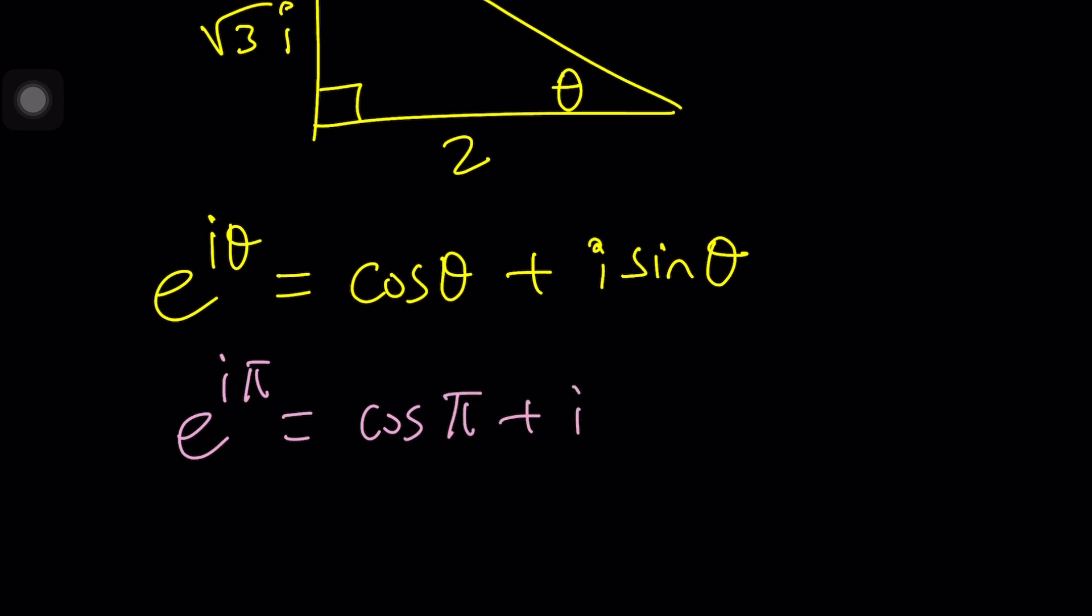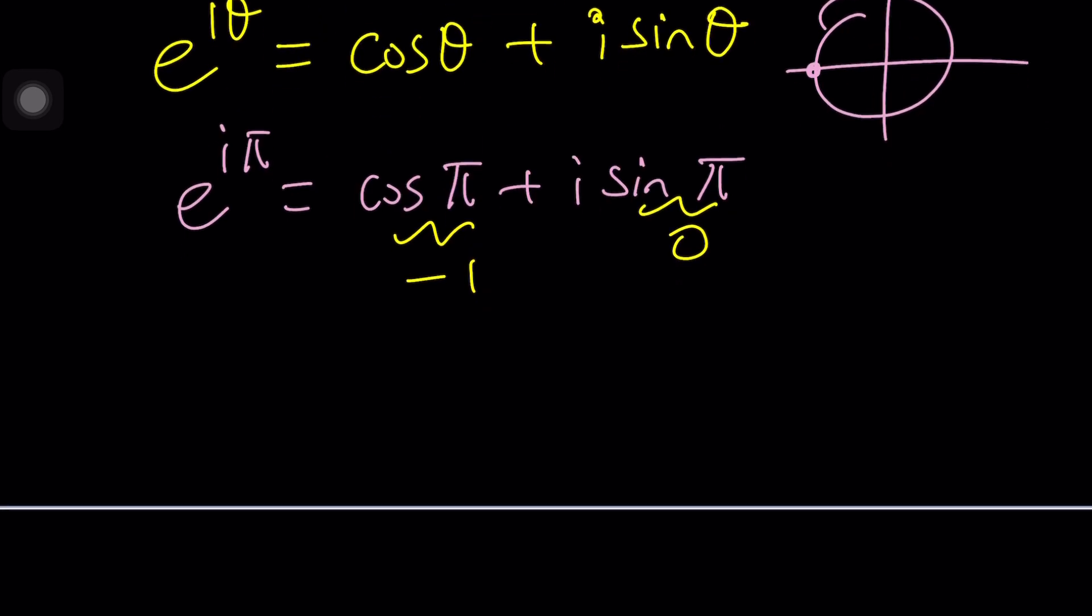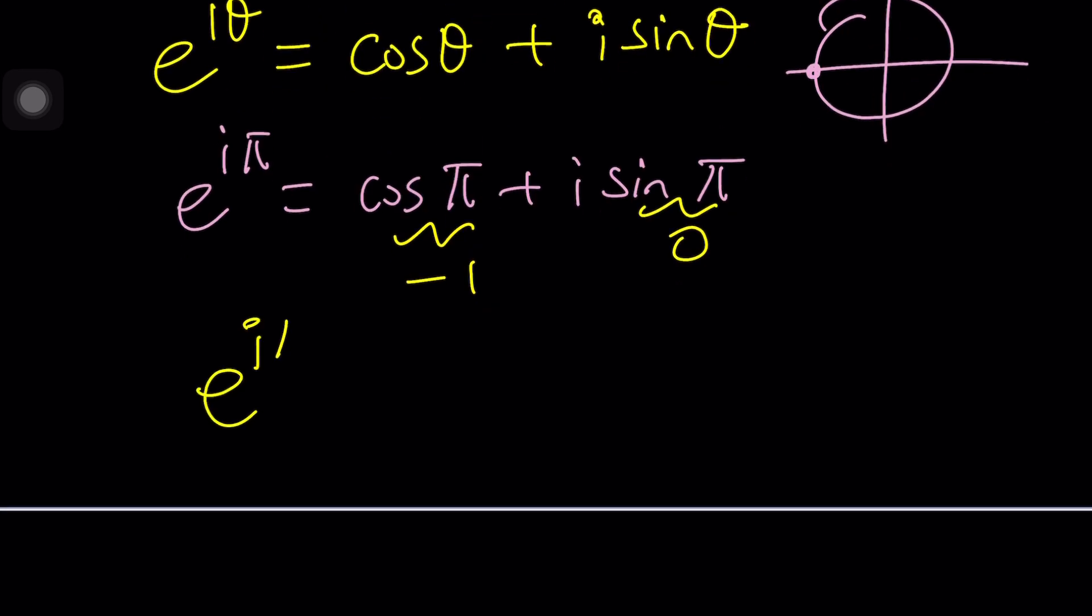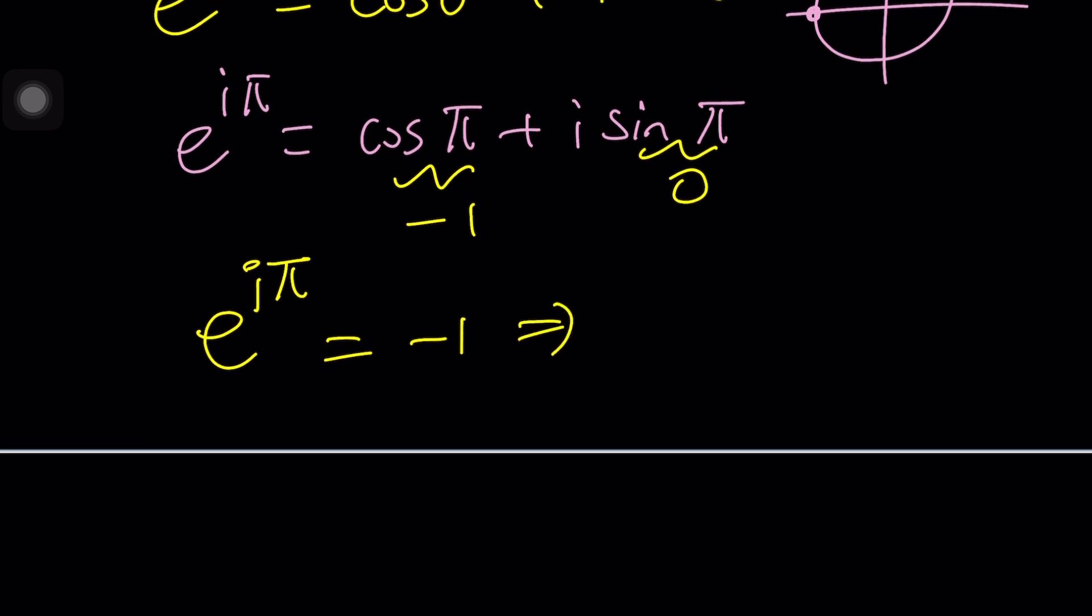As you know, sine pi is zero because it's on the x-axis. So this is zero for sine and for cosine that would be negative one. So the i disappears and we get into the real world from the complex world. And this equation is sometimes expressed as e to the i pi plus one equals zero. And it's usually called the most beautiful equation.